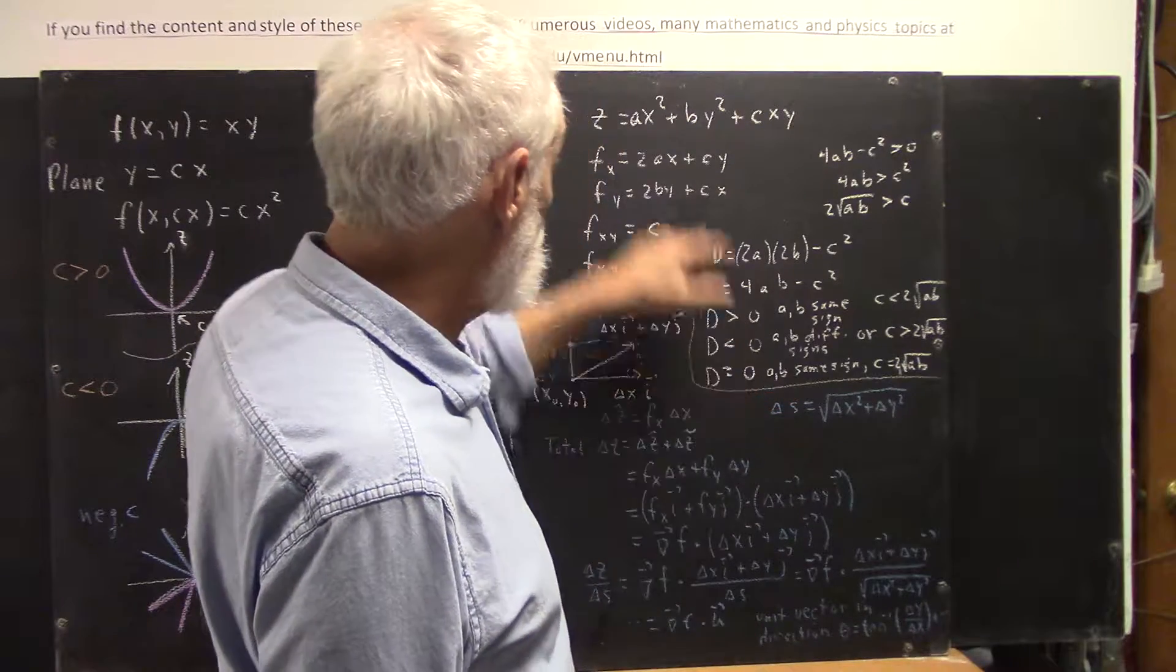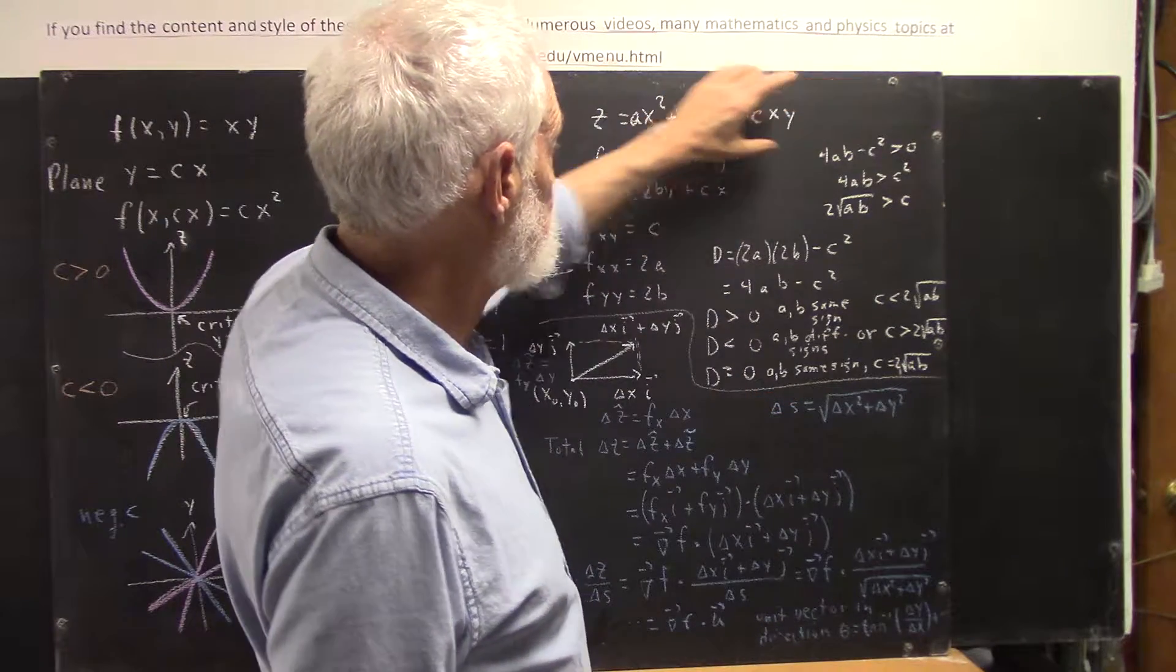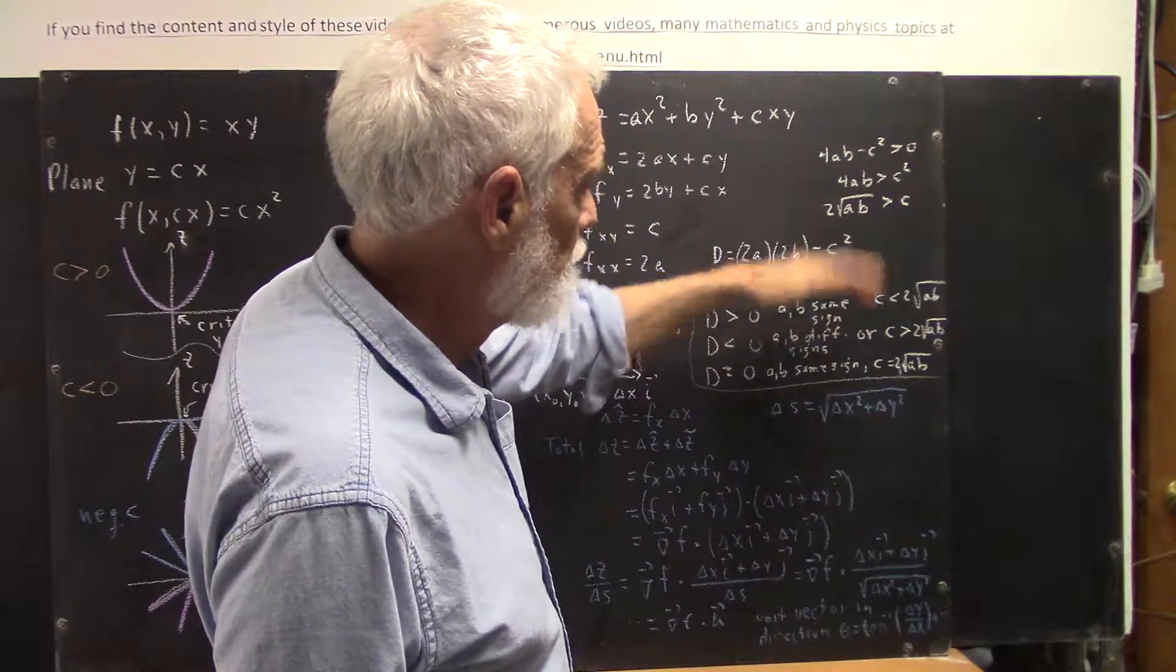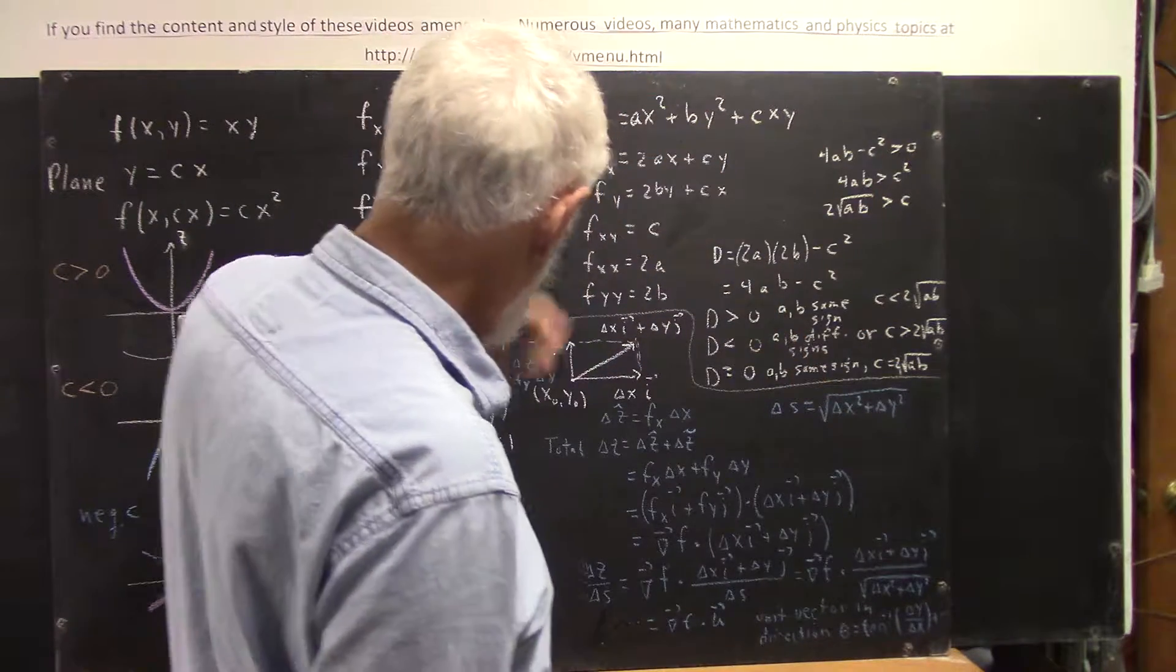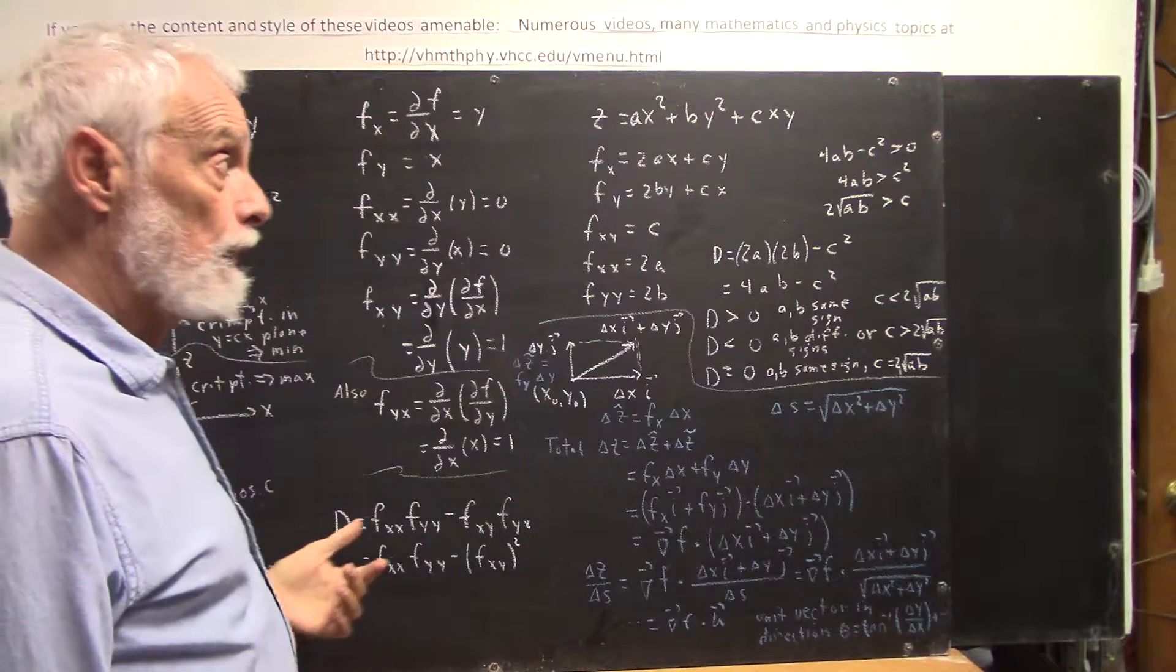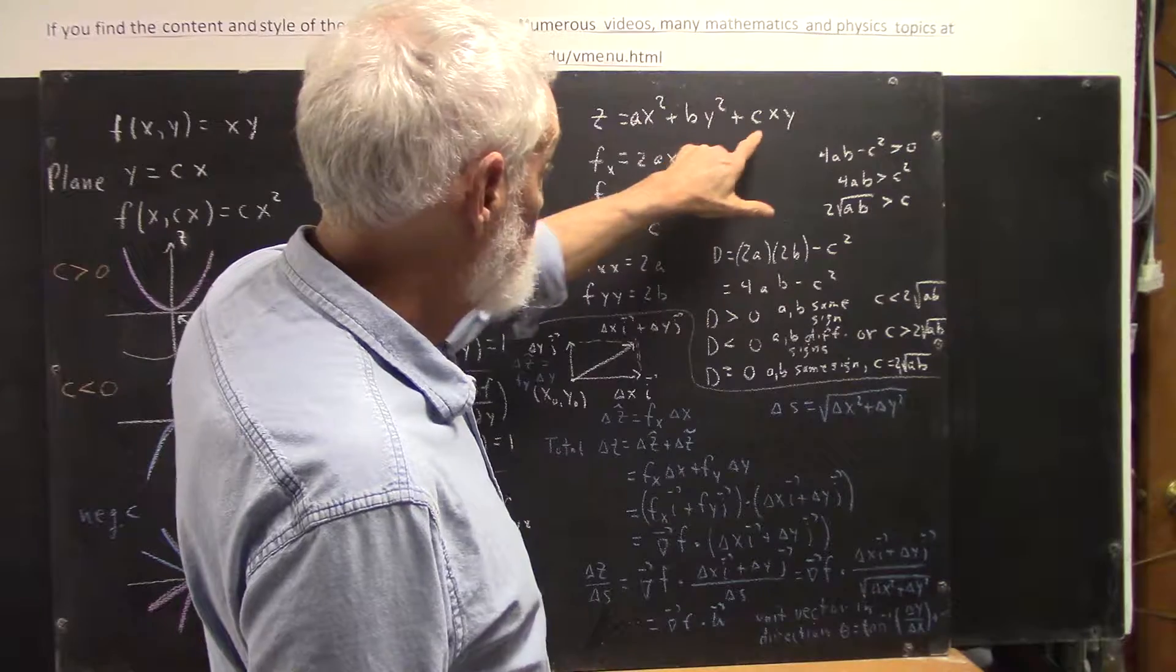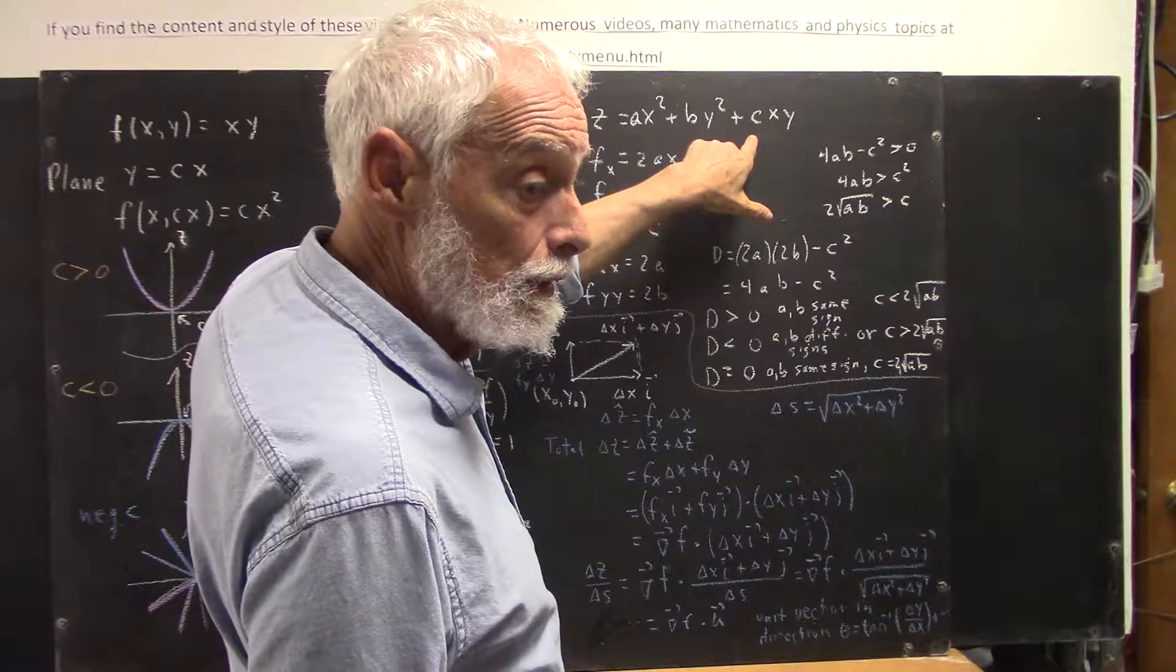So if you have a function of this nature, you don't have to memorize this as a formula. We're just using this discriminant to analyze the behavior of the function. If c is too big, you have a saddle point.